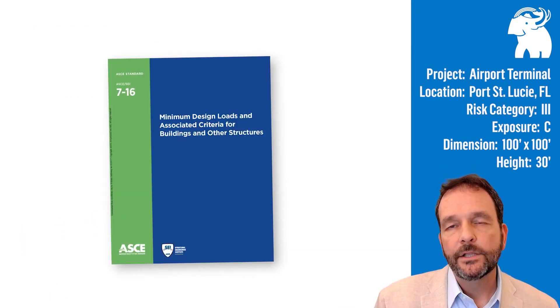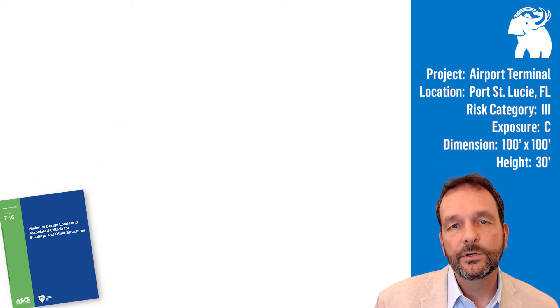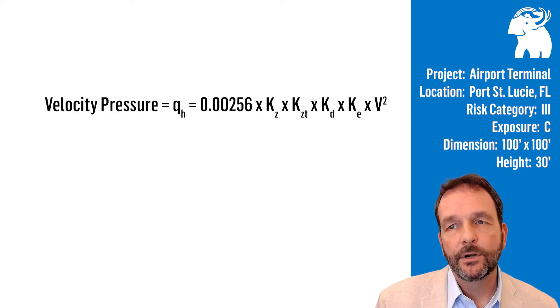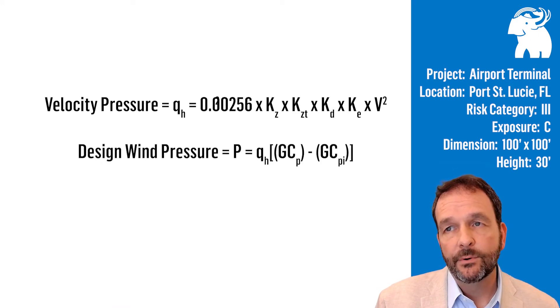In ASCE 7-16, there are two equations and seven variables used to calculate the design pressure for roofing. The first equation is for velocity pressure, the Q sub H. The second equation is our design pressure equation, our goal here, to find the design pressure for the building roof.